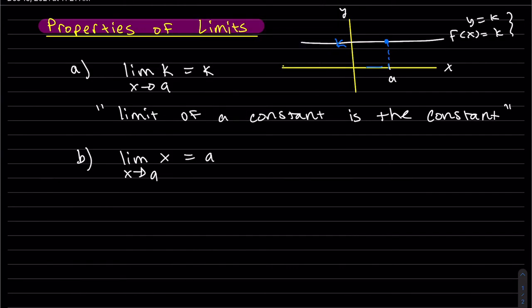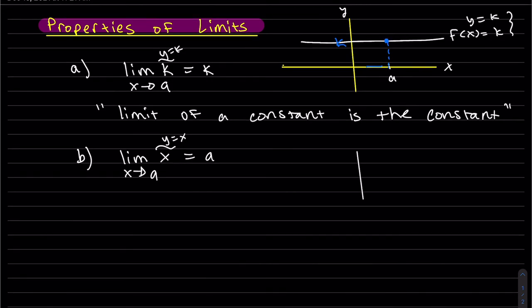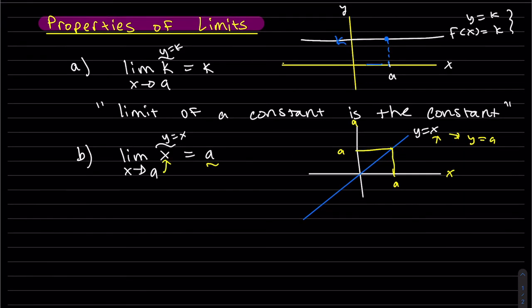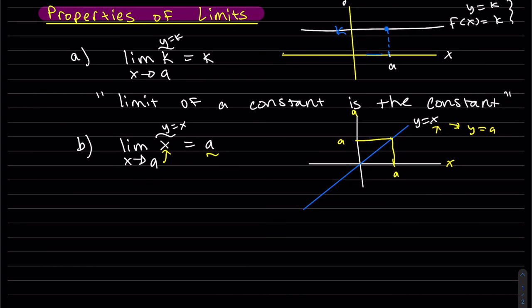The second property: the limit of x as x approaches a. Just like the previous case was y equals k, this is y equals x. So let's graph it. We can see we basically get a also, because when I plug in x equals a, I get y equals a, since y does equal x. So we're just plugging it in and we get that value. It's defined there, so of course we get that.